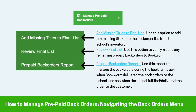The Add Missing Titles to Final List will allow you to add any missing titles to your back order list from the school's inventory. The Review Final List will allow you to verify and send any remaining prepaid back orders to Bookworm. And finally, the Prepaid Back Orders Report will allow you to manage your back orders during the book fair, as well as track when Bookworm has delivered the back orders to your school and when your school has fulfilled or delivered the order to the customer.